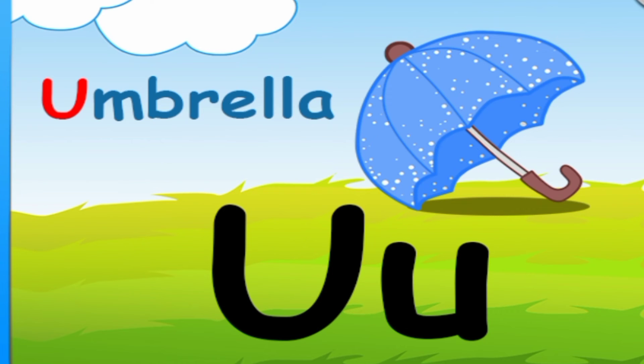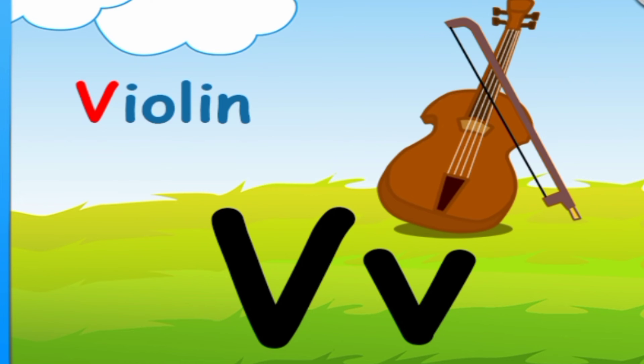U is for Umbrella. U, U, U. V is for Violin. V, V, V,